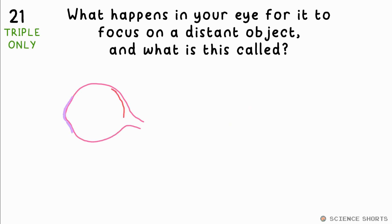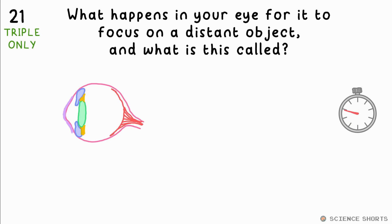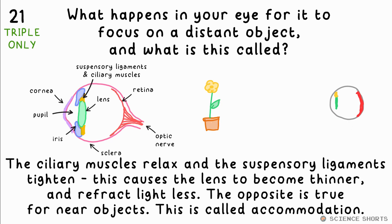What changes in your eye in order for it to focus on a distant object, and what is this called? This is accommodation. To focus on far objects, the ciliary muscles relax, the suspensory ligaments tighten, and these cause the lens to become thinner. So light refracts less, focusing it on the retina. The opposite is of course true for when focusing on near objects.